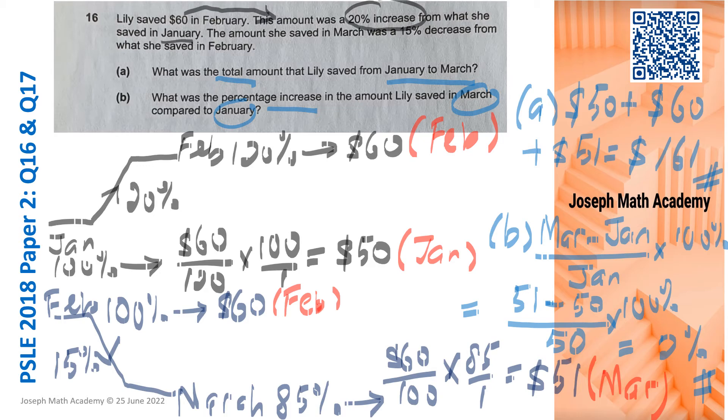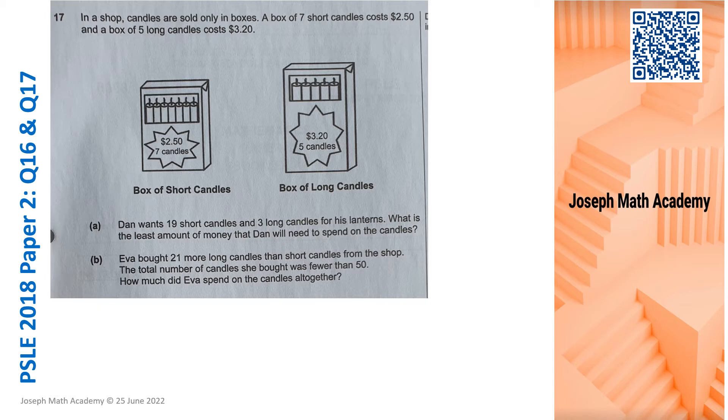Question 17. In a shop, candles are sold only in boxes. A box of seven short candles cost $2.50. A box of five long candles cost $3.20. So it's either the shorter version, which is seven candles, a box of seven, or the long ones, which is a box of five. But the pricing is different. So we are aware of the two different types of boxes of candles. A. Dan wants 19 short candles and three long candles for his lanterns. What is the least amount of money that Dan will need to spend on the candles?